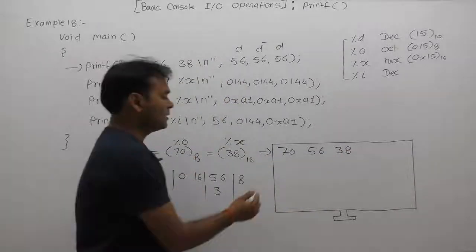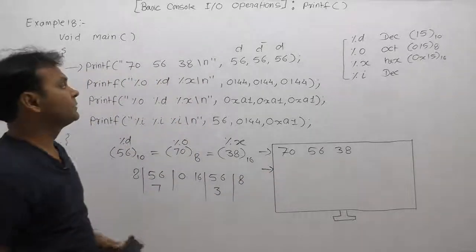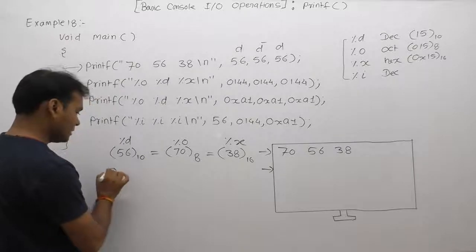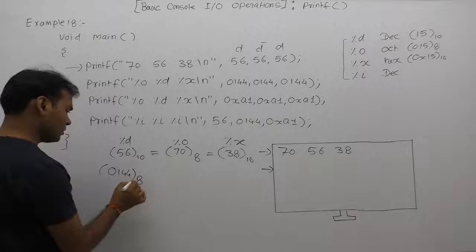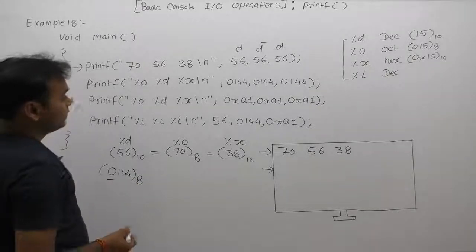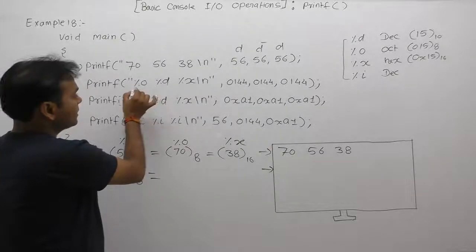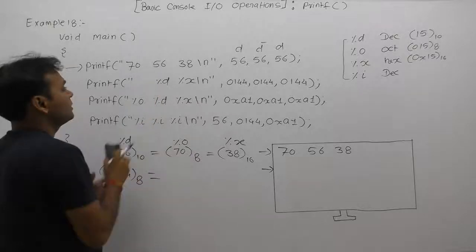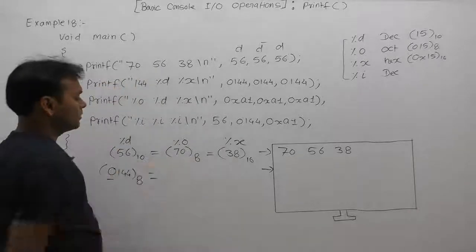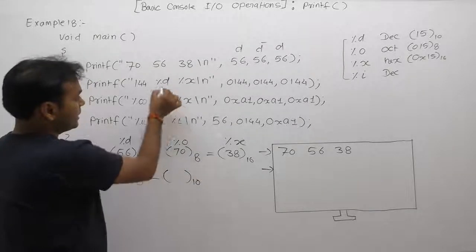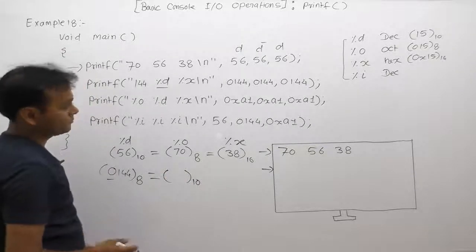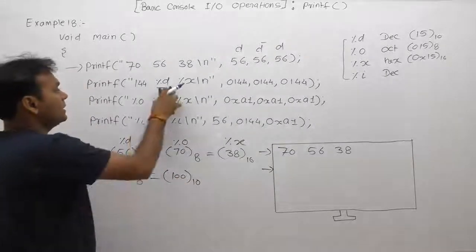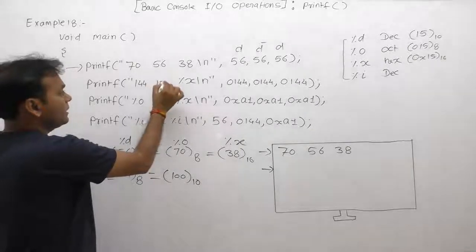After that, the newline character moves the cursor to the next line. In the next example, we supply the value as octal 0144. Since it starts with 0, its default representation is octal. For %o, the value is already in octal, so 144 is directly printed with no conversion. For %d, we need the decimal equivalent, which is 100.